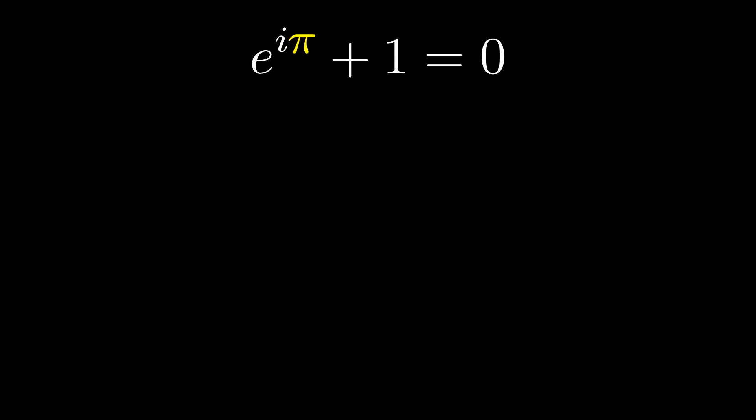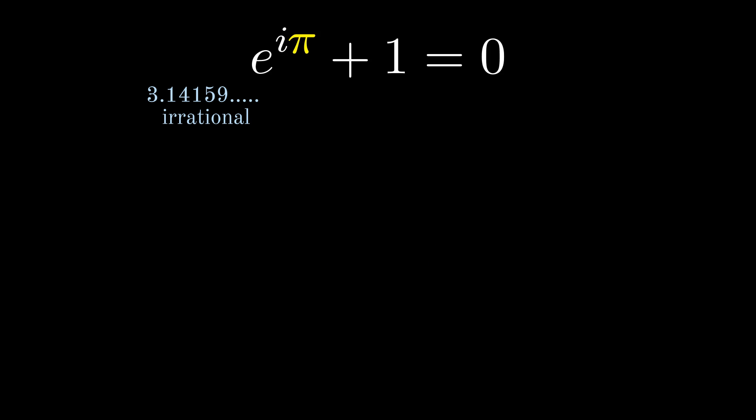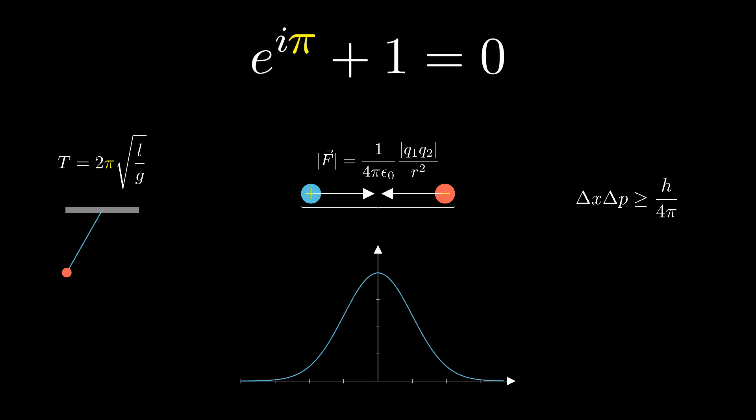Then we have pi, which equals the ratio of a circle's circumference to its diameter. It is another irrational number and shows up everywhere circles are involved. It also appears in physics equations such as those describing electric force, oscillation periods, and the uncertainty principle. In probability and statistics, the area under the bell curve is square root of pi.